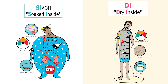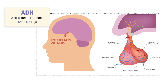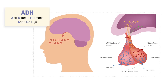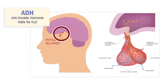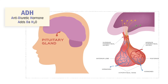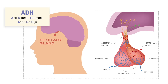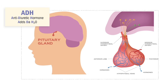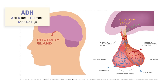A lot of NCLEX questions come from this, so it's important to know that it all revolves around ADH — the antidiuretic hormone created in the posterior pituitary at the base of the brain. Our memory trick for this is: ADH adds to H2O. This keeps fluid in the body and not in the potty.